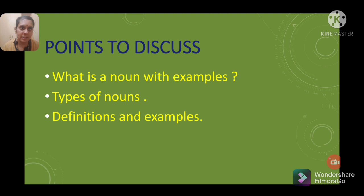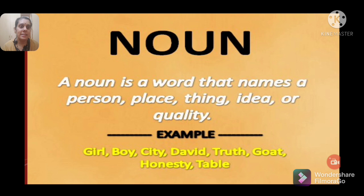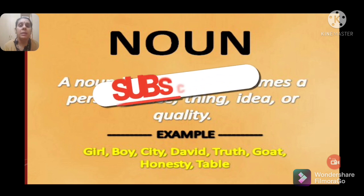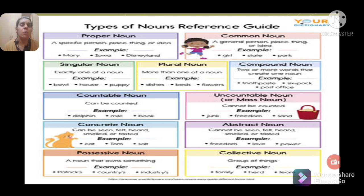In this topic we will learn: what is a noun with examples, types of nouns, and definitions of nouns with examples. A noun is a word that names a person, place, thing, idea, or quality. Examples include: girl, boy, city, David, truth, goat, honesty, table, etc. We also call nouns 'naming words' because they tell the name of a person, place, thing, idea, or quality.